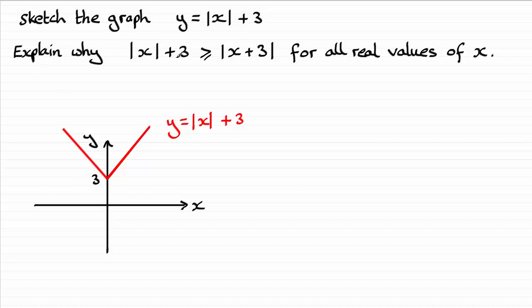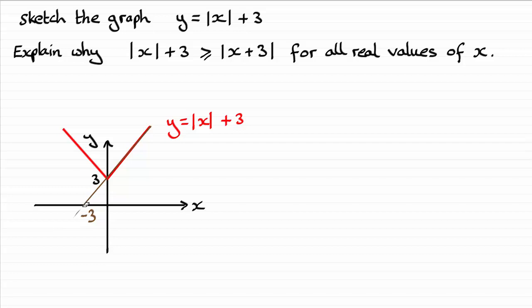Now to explain why the mod of x plus 3 is greater than or equal to the mod of all of x plus 3, let's draw the graph of y equals the mod of x plus 3. If we draw the graph of y equals x plus 3, it lies on top of this graph and passes through the x-axis at negative 3. When we take the modulus, the negative values are reflected in the y-axis, giving us the graph of y equals the mod of all of x plus 3.